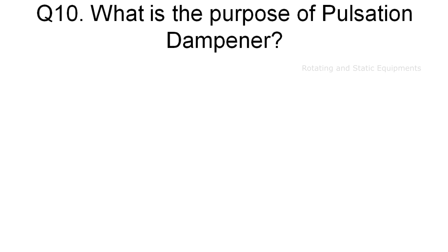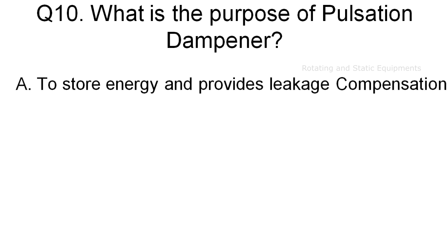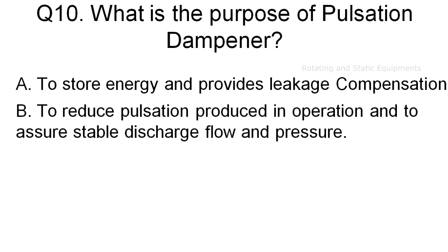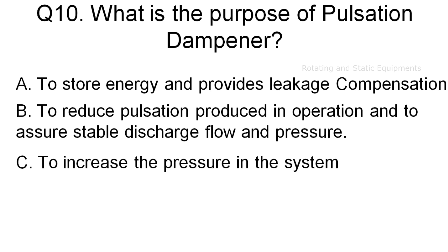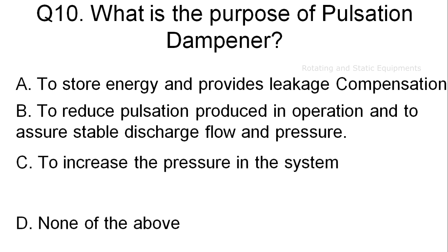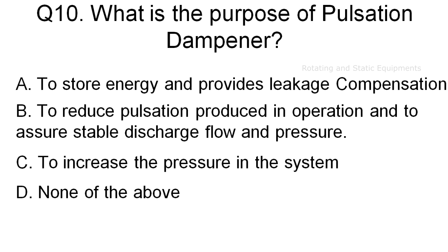Question 10 — the last question: What is the purpose of a pulsation dampener? Option A: to store energy and provide leakage compensation. Option B: to reduce the pulsation produced in operation and to assure stable discharge flow and pressure. Option C: to increase the pressure in the system. Option D: none of the above.